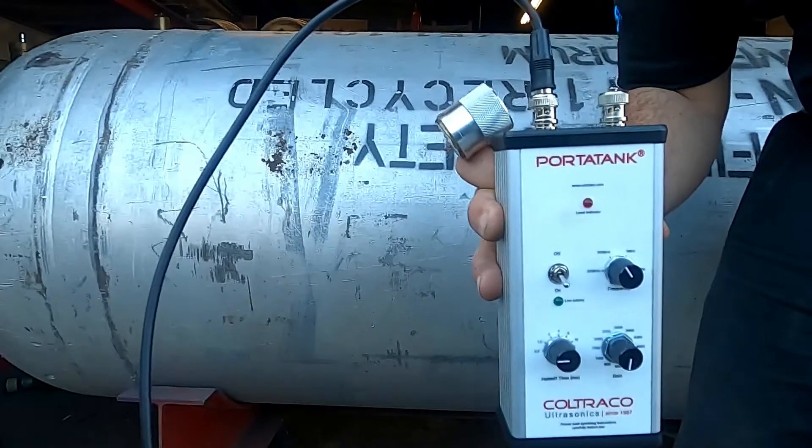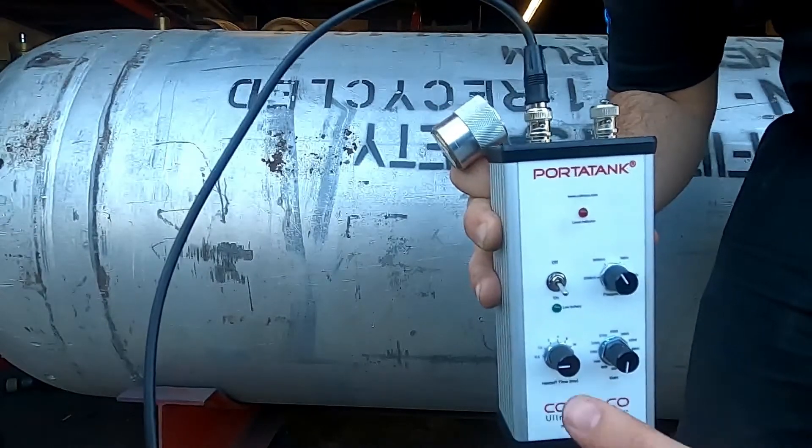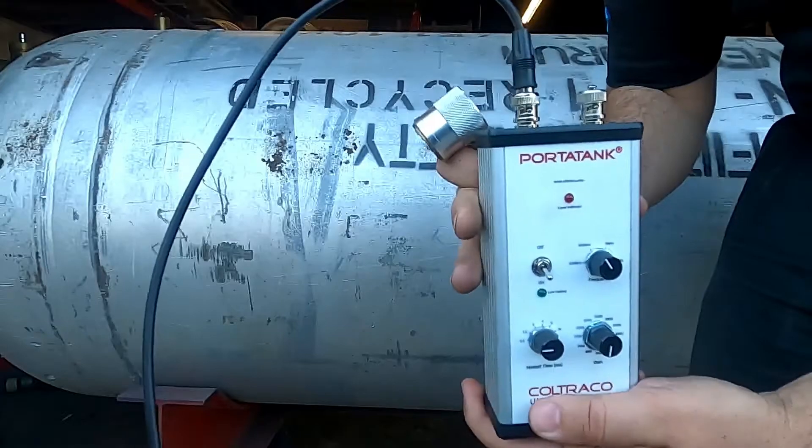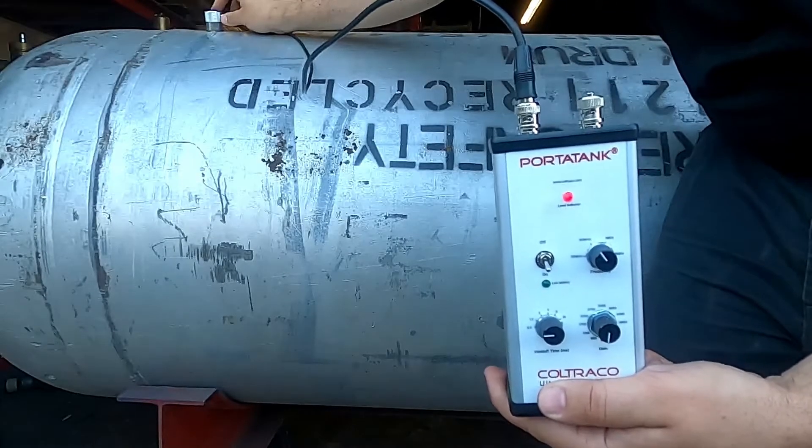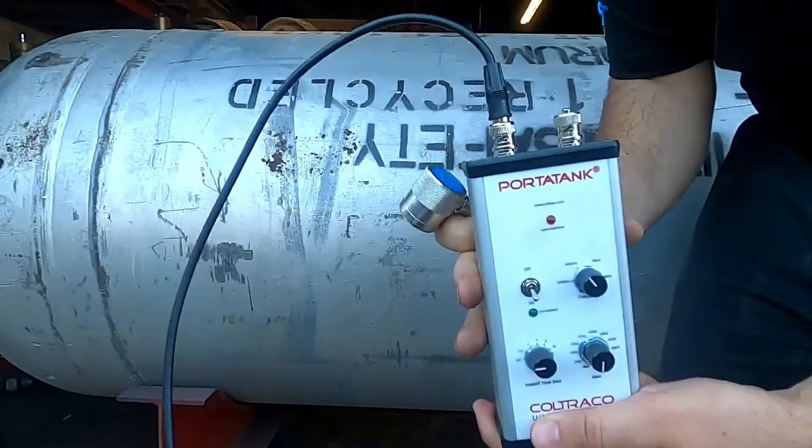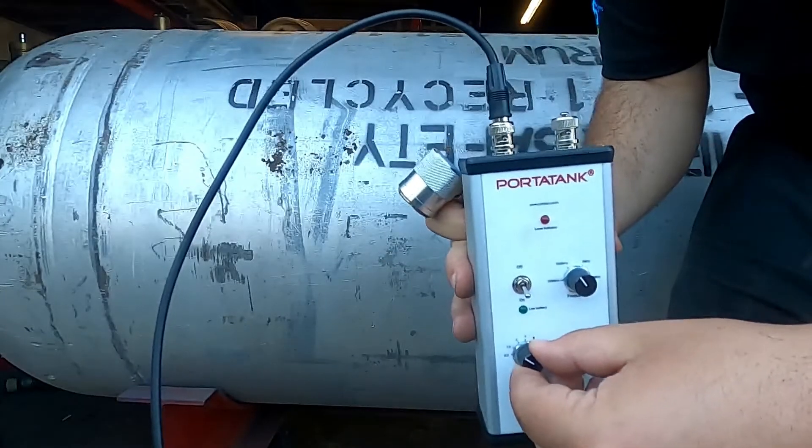Now we're ready to place the sensor on the cylinder, and while we're doing that, we're going to be adjusting our hold off time. So I'm going to place it on top where I know there's no agent and I want the LED light to be off. And since it was on, I need to turn that hold off time just a little higher.